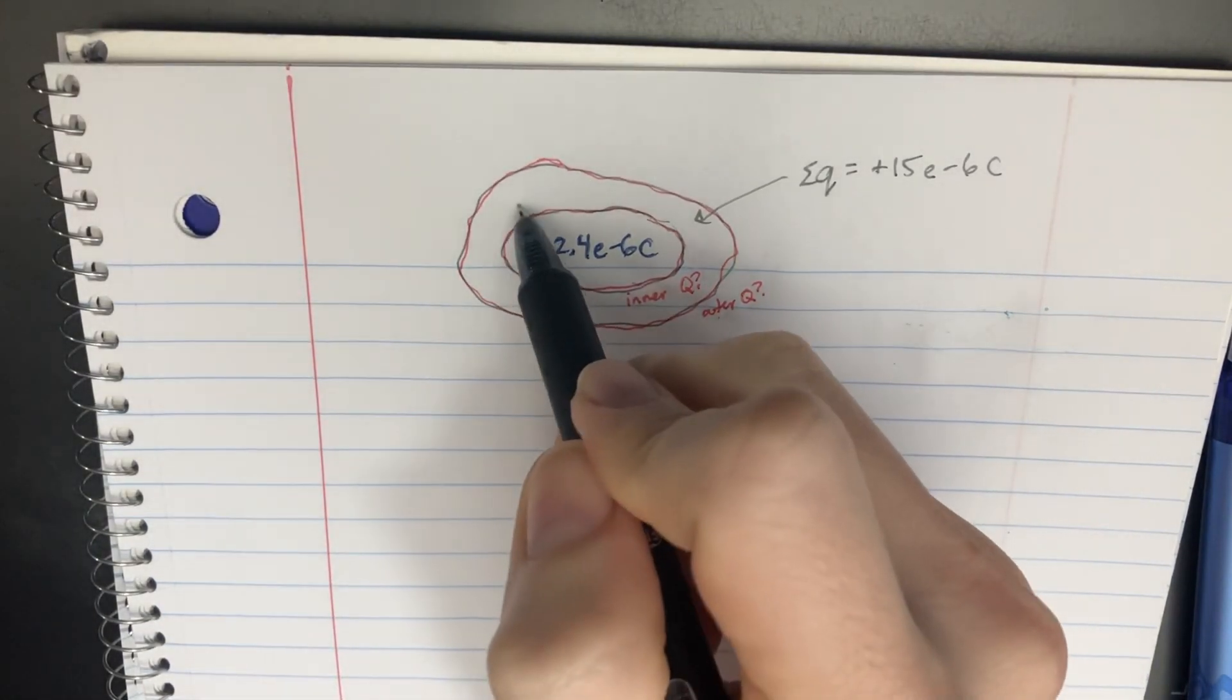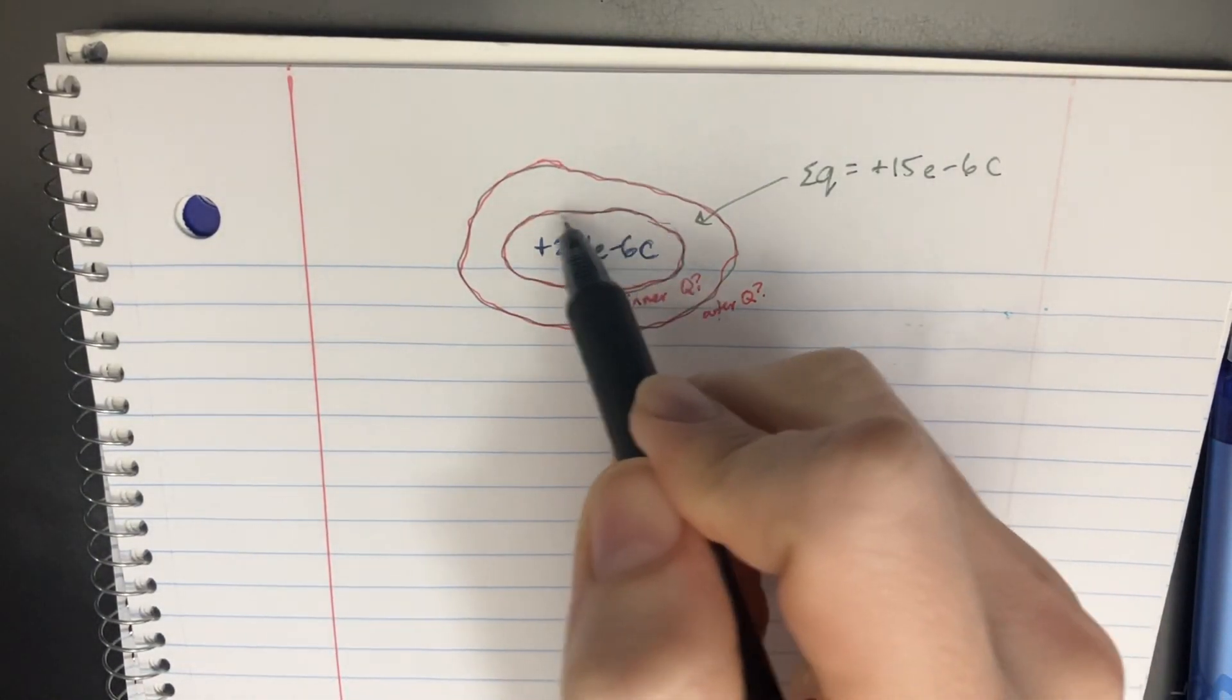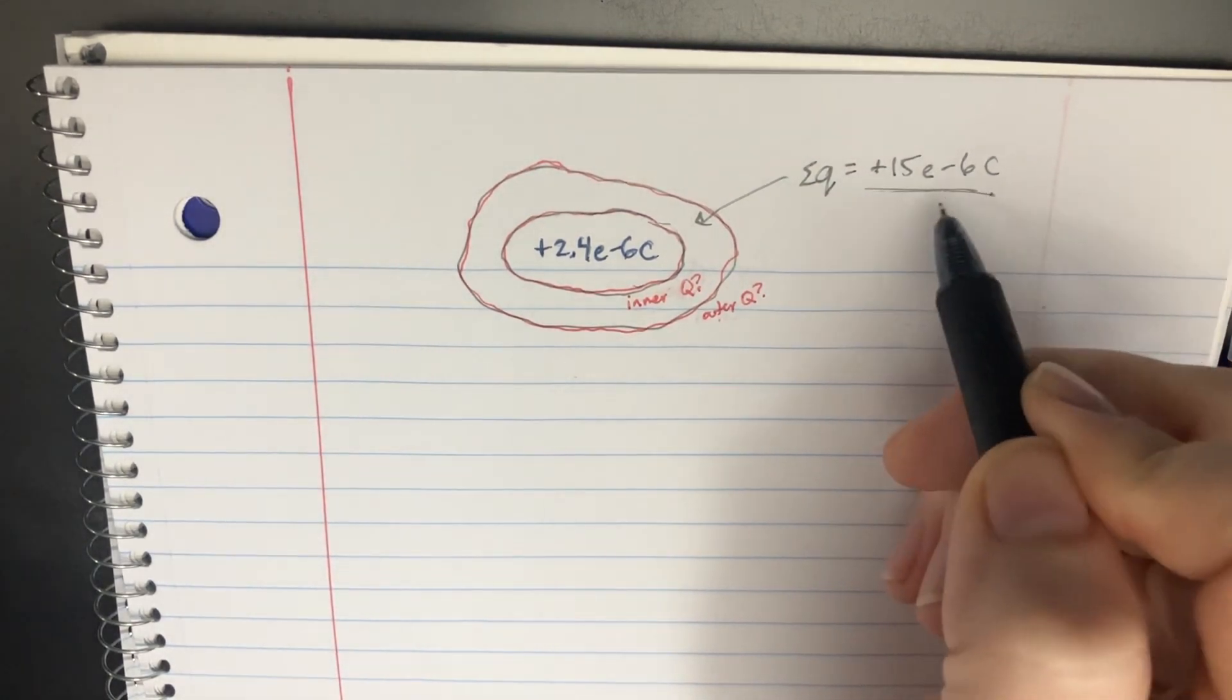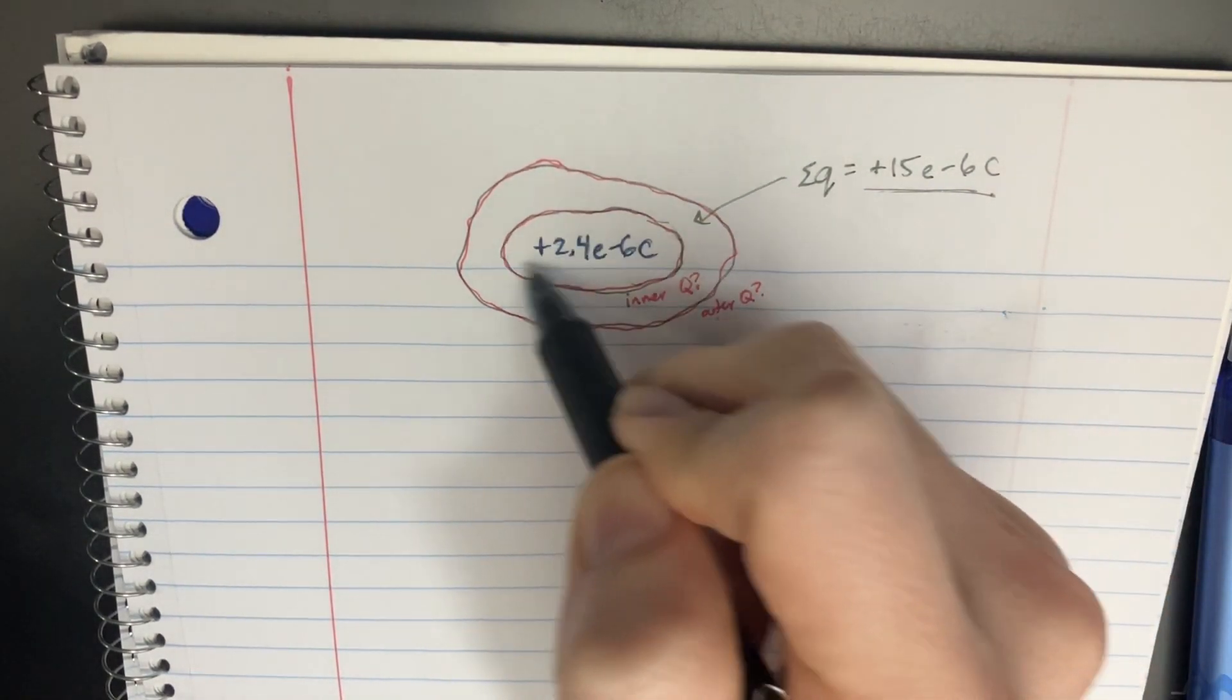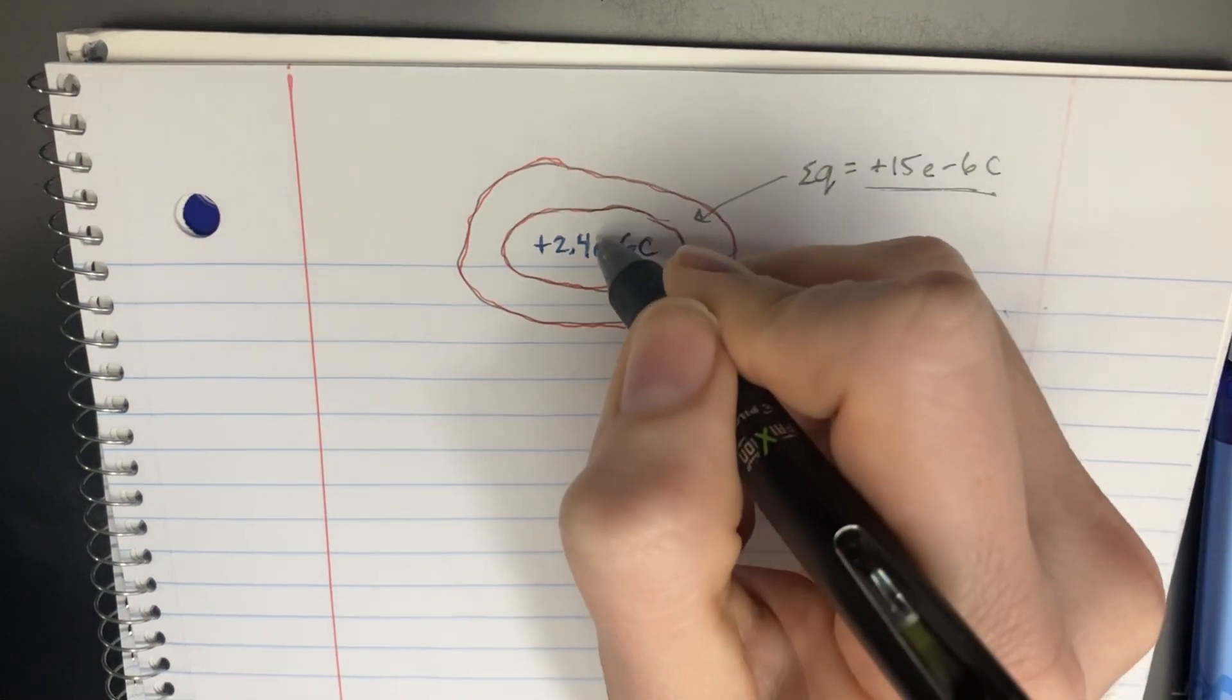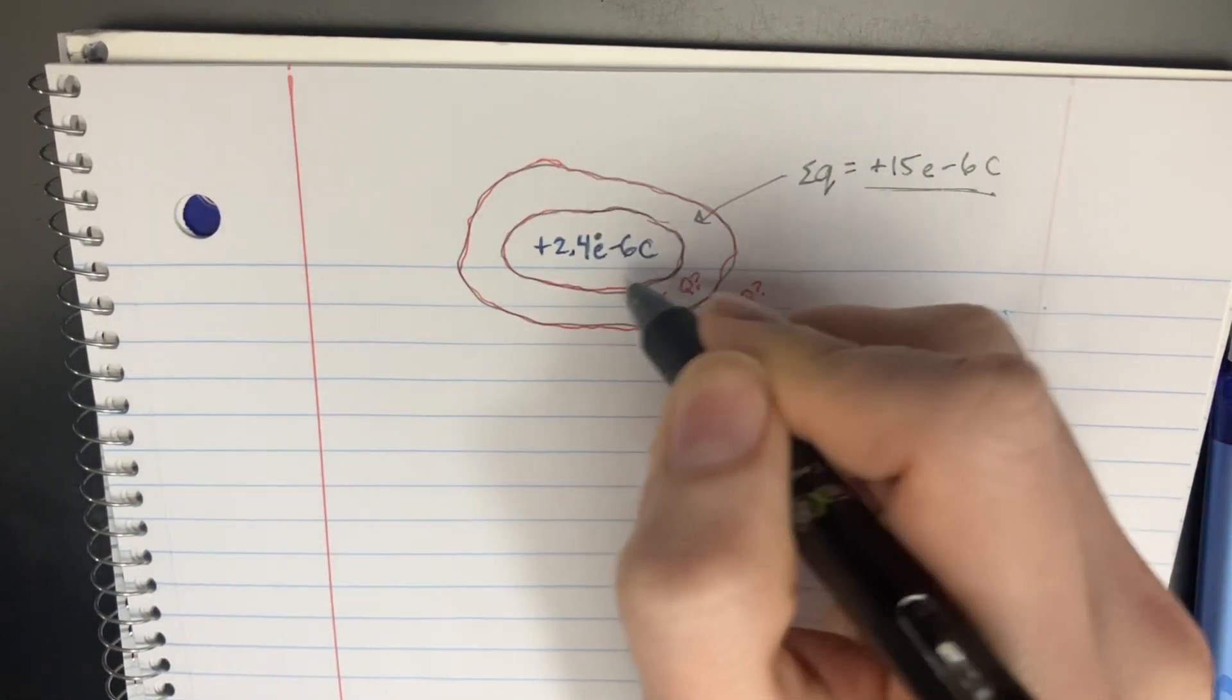This question says that we have this isolated conductor, and it has a net charge of positive 15. And there's a cavity in the middle here, a gap, with a particle that has a charge of 2.4.